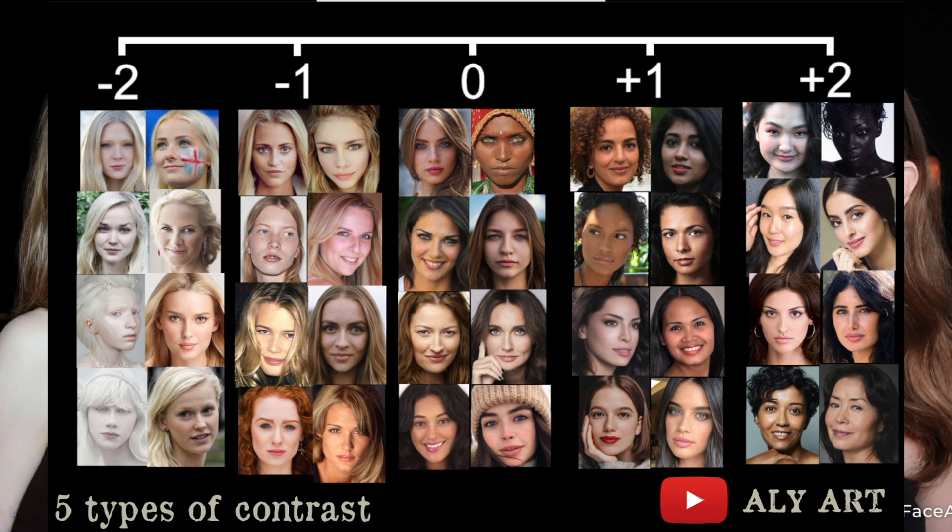Going back to her younger age, we can see that her complexion is very light with rosy undertone, so she's on the cooler side. In 12-season color analysis she would probably be a light summer. She has ashy dark blonde hair and blue eyes. On the scale of darkness and lightness she would be on the lighter side.